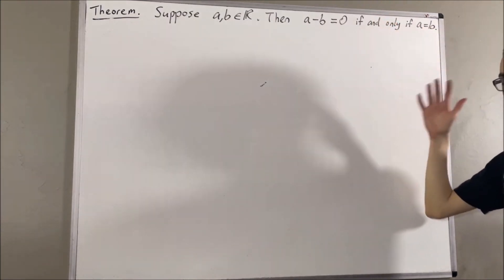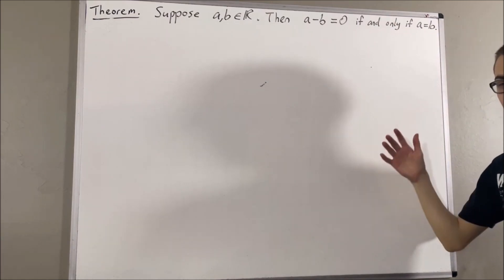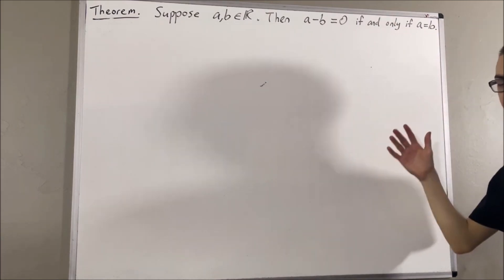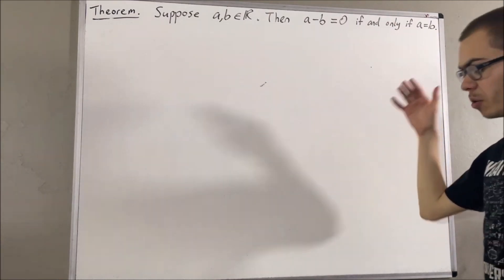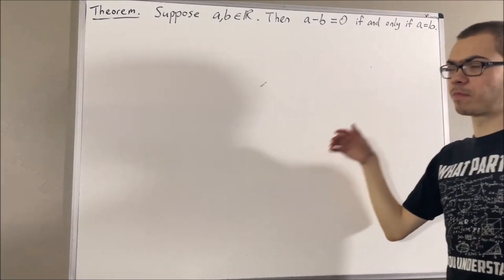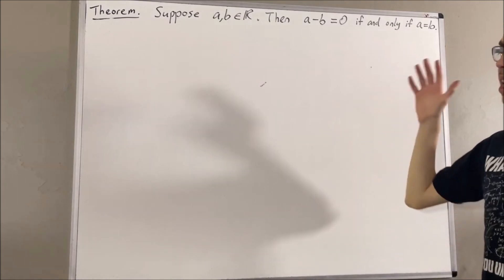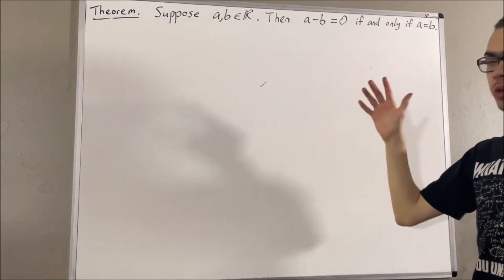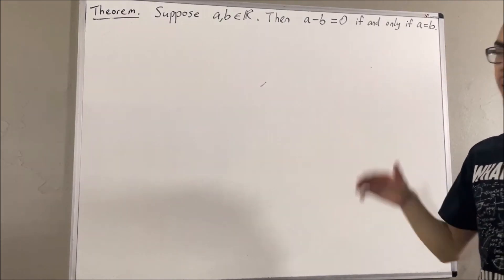Now in this series, we are using a list of ten axioms for the real number system, and I'll leave that list of axioms in the description below. In this video, we are going to be using the following axioms.